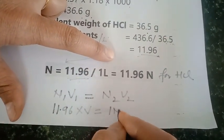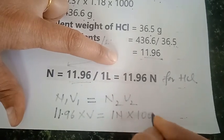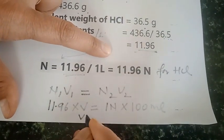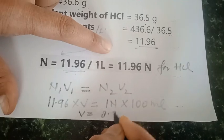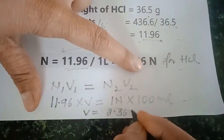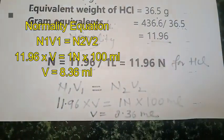So I have used this normality equation N1V1 is equal to N2V2 and I put all the values because I need to prepare one normal 100 ml solution. So for that purpose I require volume is equal to 8.36 ml.